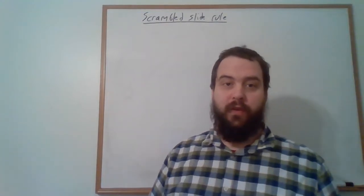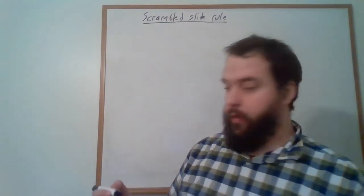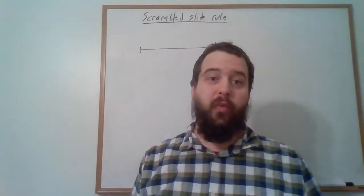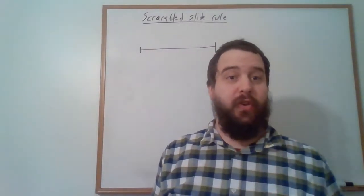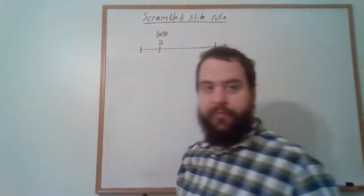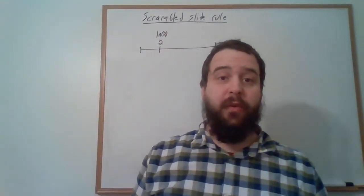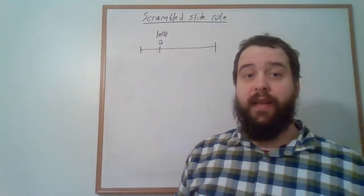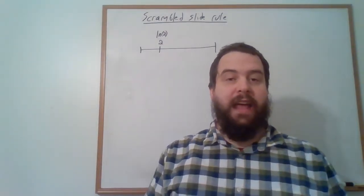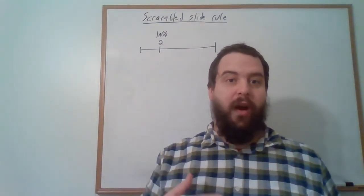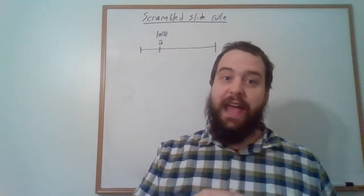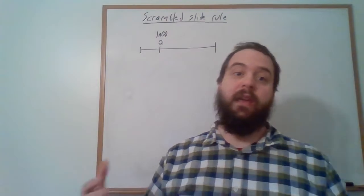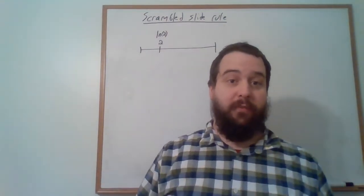Normally, what you would do is take a ruler, and at ln(2) units down the ruler, you would write the number 2. Then at ln(3) units down the ruler, you write 3; at ln(4) units, you write 4, and so on. Because ln(a) + ln(b) = ln(a × b), this ruler allows you to calculate products.